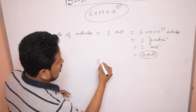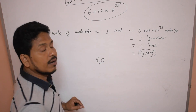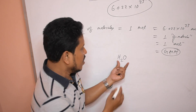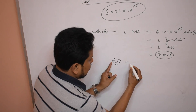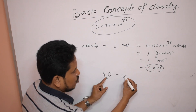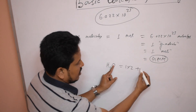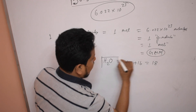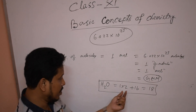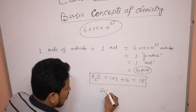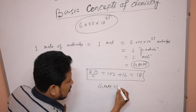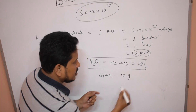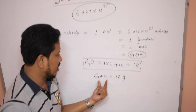For example, let the molecule be water. H₂O is the molecular formula of water — we know one molecule of water. So the molecular mass of water is: atomic mass of hydrogen is 1, with 2 atoms that is 2, and atomic mass of oxygen is 16, so the total is 18. This is the molecular mass of water.